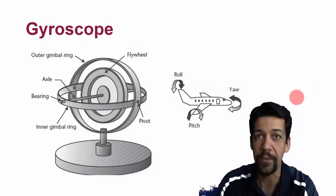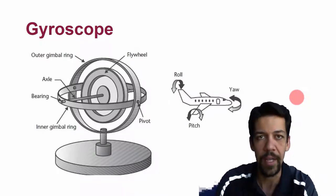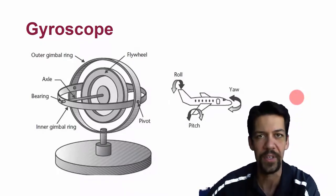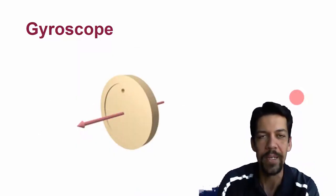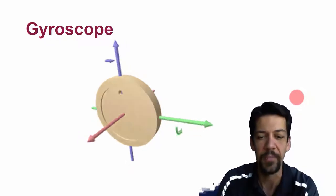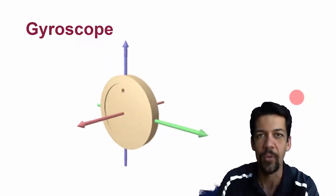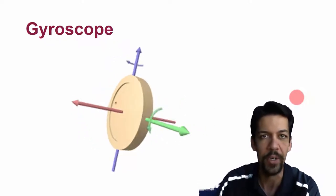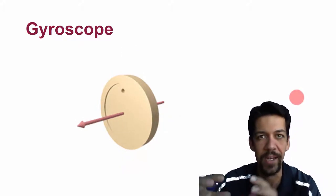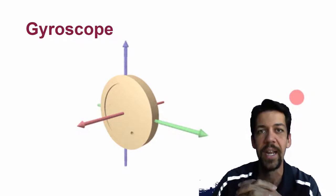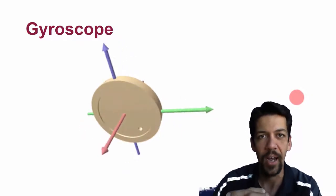Gyroscopes work in a different way. They measure the twist or rotation of a system. The way they do this is based on angular momentum. If we have a spinning disk and we try to push it in one direction or another, we're going to have an opposite force. Angular momentum is trying to be conserved and that generates an opposite force.